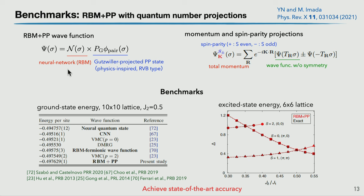The quantum state at finite-size systems is labeled by quantum numbers. We apply total momentum and spin parity projection to symmetrize the wave function. A good point of this projection is that we can compute not only the ground state but also excited states. In this model, the ground state is at total momentum zero and even spin parity sector. If we compute the finite-momentum state, it corresponds to an excited state.